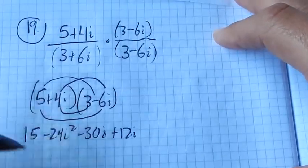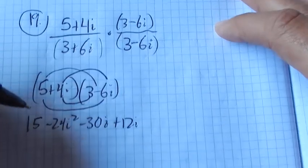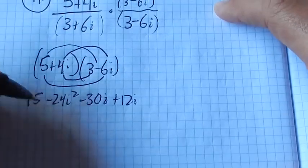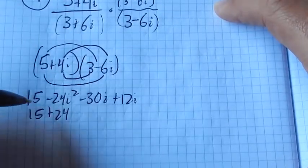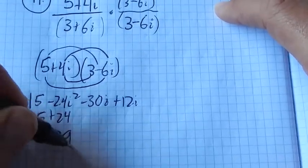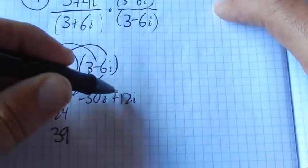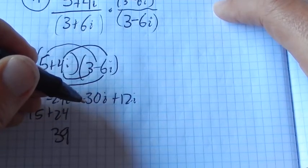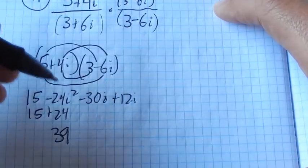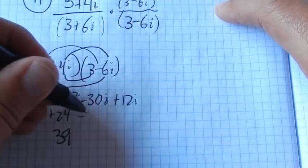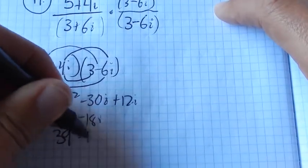Now i squared is negative 1, so this negative 24 becomes positive 24. 15 plus 24, what's that? 39. Negative 30i plus 12i: that's negative 18i. So my numerator is 39 - 18i.